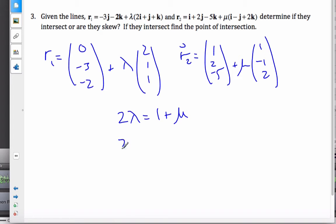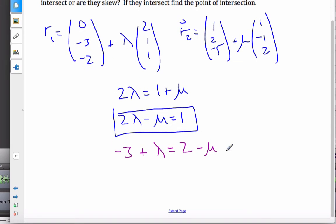And so, I take my x component. 0 plus 2 lambda is equal to 1 plus mu. And so, 2 lambda minus mu is equal to 1. This is equation from the x's. Switching to the y's, I can say that minus 3 plus lambda is equal to 2 minus mu, which, rewriting this in the same order, lambda plus mu is equal to 5.